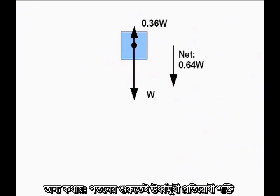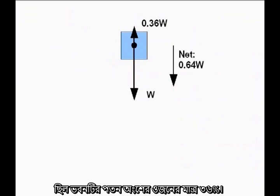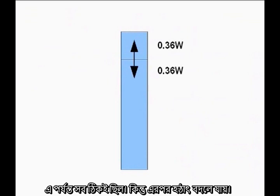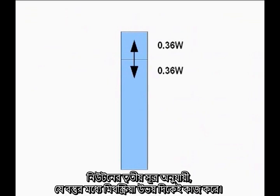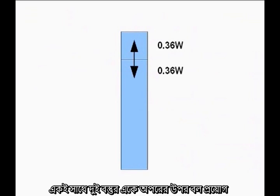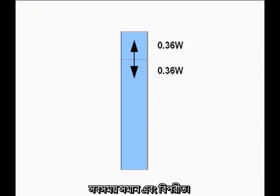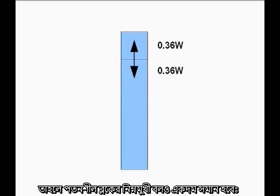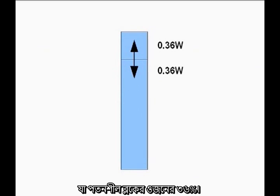In other words, once it starts falling, the upward resistive force is only 36 percent of the weight of the falling section of the building. Newton's Third Law says interactions between objects work both ways — the forces two objects exert on each other are always equal and opposite. If the upward force acting on the falling block is 36 percent of the weight of the falling block, the downward force exerted by the falling block must be exactly the same: 36 percent of the weight of the falling block.